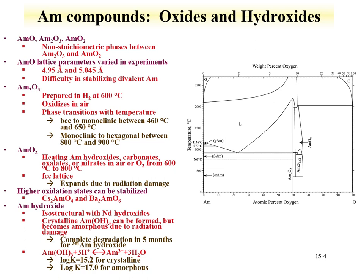Americium dioxide is preferentially formed and can be produced by heating americium compounds in air or oxygen from 600 to 800 degrees. The main structure is face-centered cubic, and this structure can expand due to radiation damage. Higher oxides can be stabilized through the formation of mixed metal compounds, since americium does have higher oxidation states. The americium-3 hydroxide, which can be formed by precipitation in basic solutions, is isostructural to neodymium hydroxides. The compound can be crystalline but becomes amorphous due to radiation damage, and the hydrolysis and solubility constants are known.